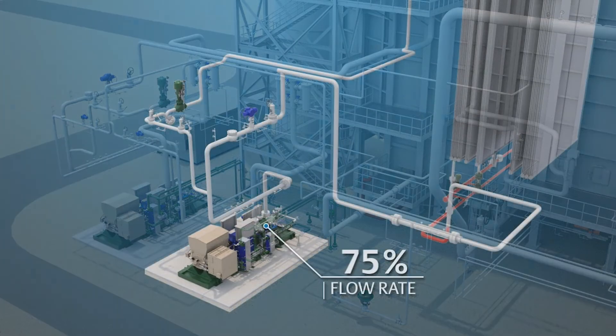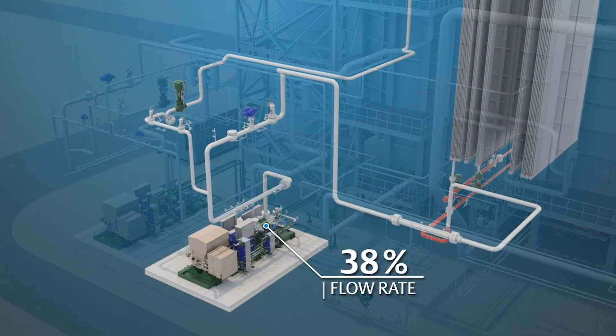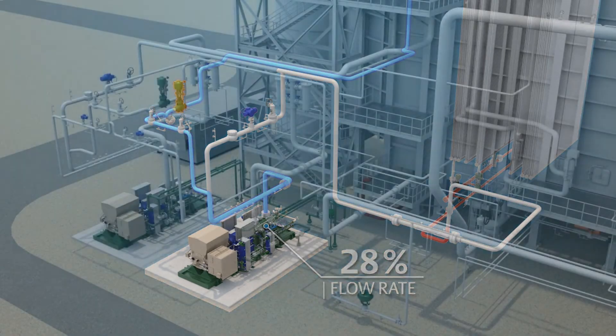When feedwater flow rate is reduced below 30%, the boiler feedwater pump recirculation valve opens to maintain required cooling flow through the pump.